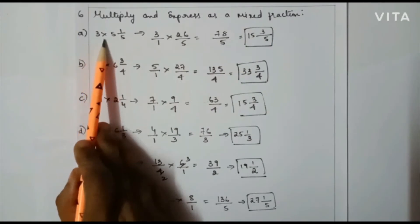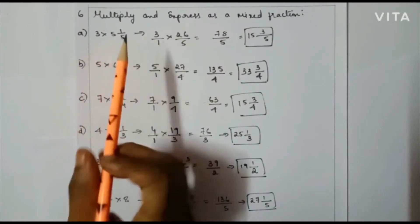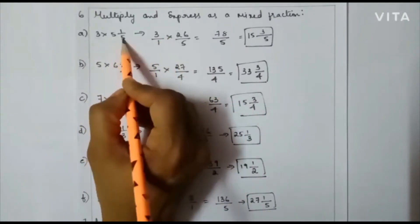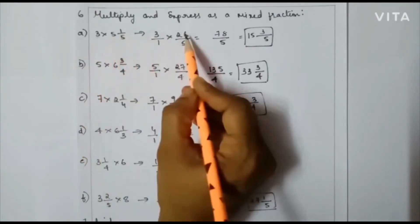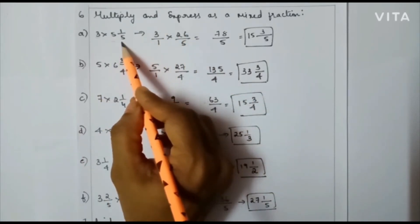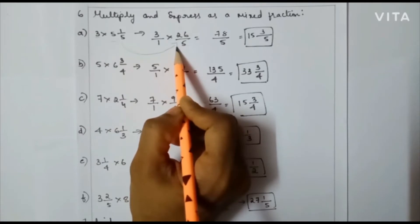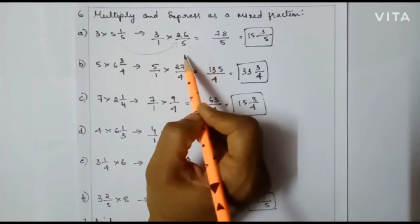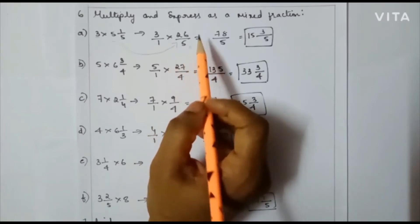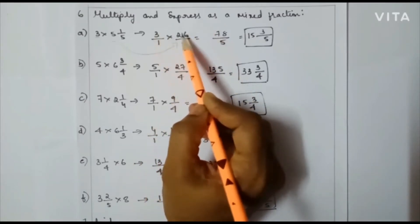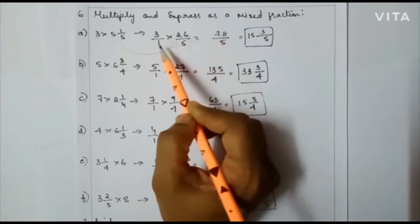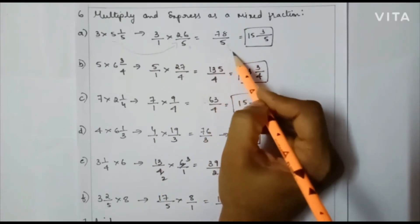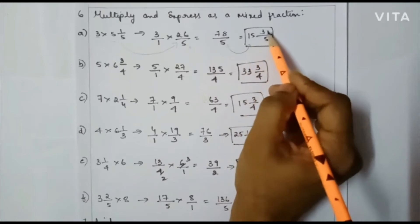First one: 3 × 5(1/5). Here we have a whole number and a mixed fraction. We convert the mixed fraction to an improper fraction: 5 × 5 = 25, plus 1 = 26/5. So we have 3/1 × 26/5. I can't cancel here. So 3 × 26 = 78, and 1 × 5 = 5. So 78/5 is the answer. Converting to a mixed fraction gives 15 and 3/5.